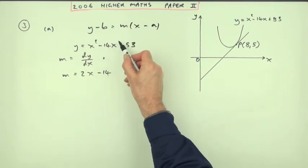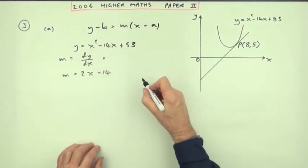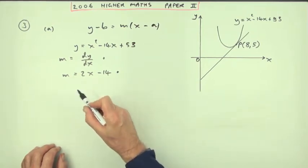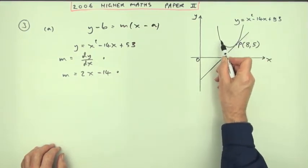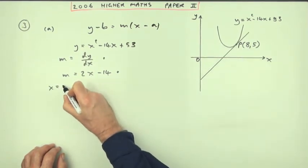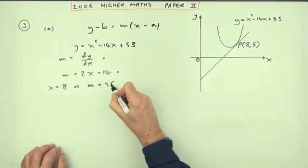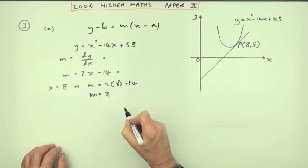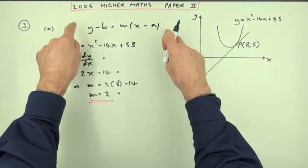With a linear term you just think of it as the coefficient. Differentiating gives the second mark, and then finding the gradient at the specific point gives the third mark. Here the x-coordinate is 8, so if x equals 8, the gradient is 2 times 8 minus 14, which is 16 minus 14, giving a gradient of 2. That's the third mark — you now know everything needed to finish the equation.